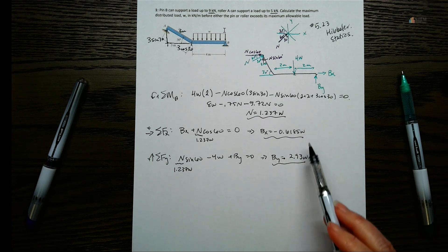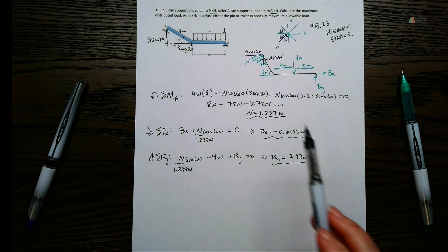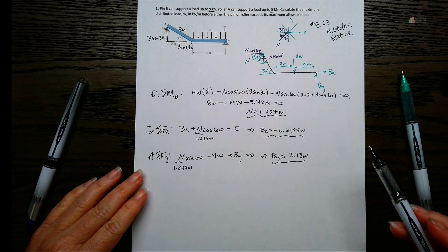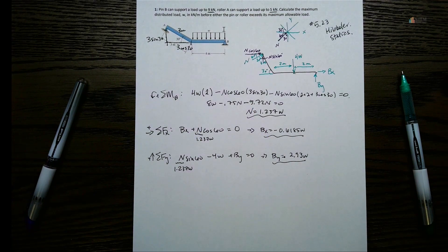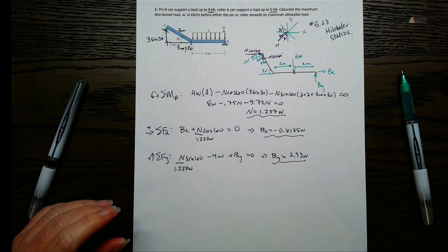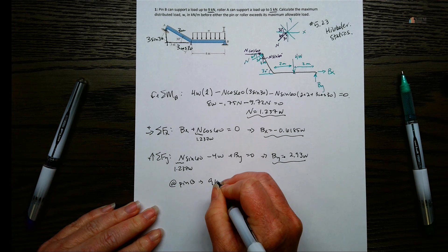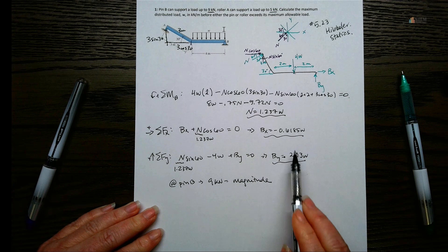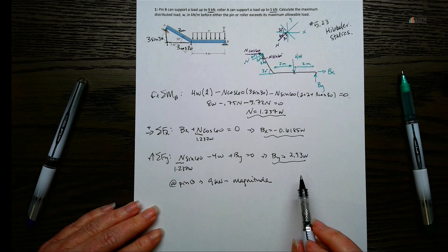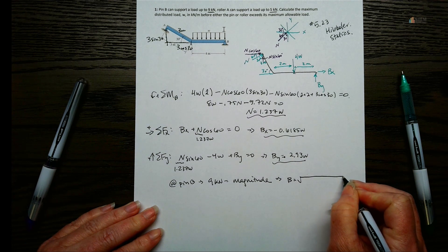So now we've got everything in terms of W. And we've got to figure out what the max load W can be and still meet these requirements. First of all, let's look at what was given for the pin. So it says pin B can support a load of 9 kilonewtons. 9 kilonewtons is a magnitude. Now I've got these separate components for B, but they're not a magnitude. So what I need to do, then, is let's find the magnitude for B. So let's do the square root of BX squared plus BY squared.